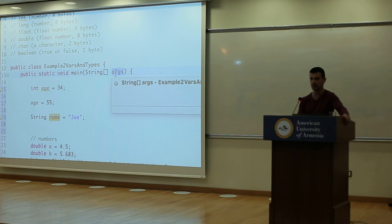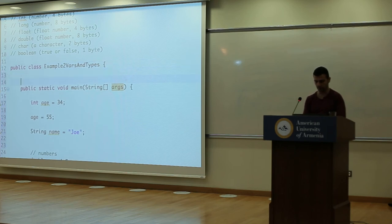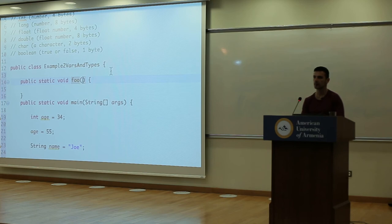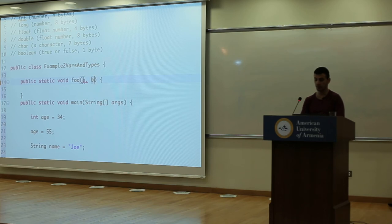Let's create a function. If I wanted foo to take two integers, I write 'public static void foo(int a, int b)'. In JavaScript we'd just write 'a, b', but in Java we have to say what each parameter is: int a, int b.